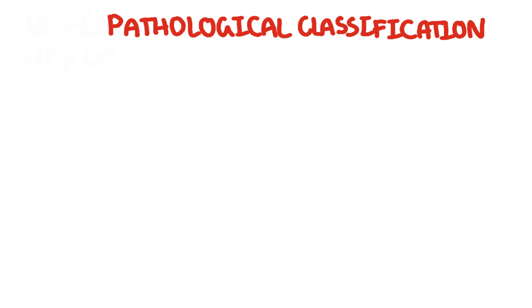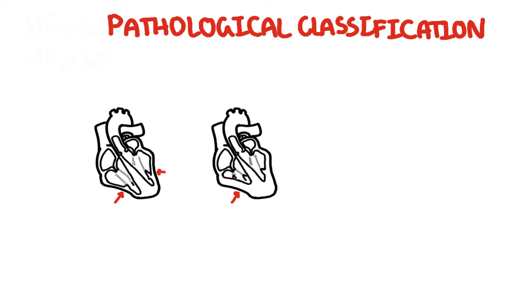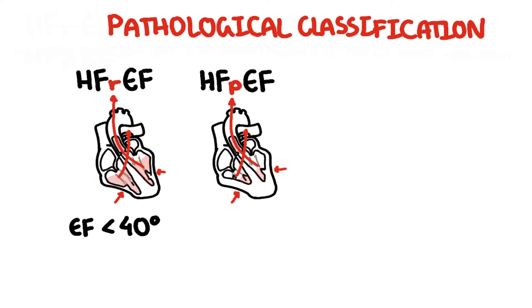The pathological classification of heart failure is based on ejection fraction. Patients with chronic heart failure can either be heart failure with reduced ejection fraction or heart failure with preserved ejection fraction. Heart failure with reduced ejection fraction is where there is impaired systolic function, impaired emptying represented by an ejection fraction less than 40%. Heart failure with preserved ejection fraction is an impairment in filling, but you have preserved ejection fraction of greater than 50%.